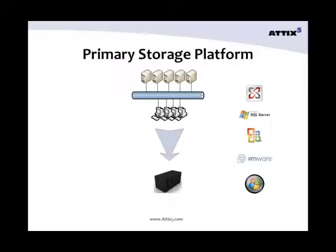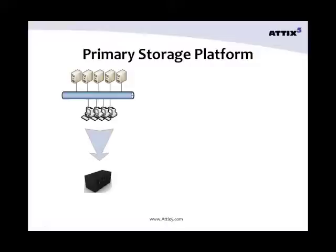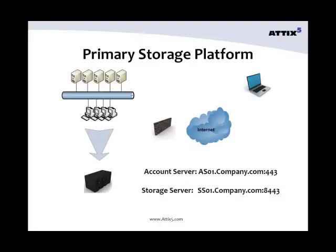My storage platform is installed on the local area network and the clients transmit their backed up data over the network to the storage server. I also have some home workers with company laptops that need to be backed up. By creating the required rules on my firewall, I am able to publish my account server and storage server to the internet or via VPN and make them available to my remote workers for backup. All of the data is encrypted and transmitted over SSL. The typical ports used for this configuration are TCP/IP port 443 for the account server and 8443 for the storage server.